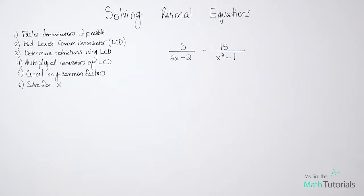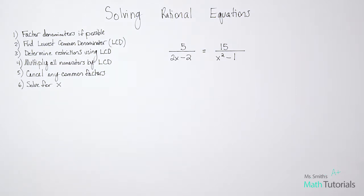Our first step is going to be to factor the denominators if possible. Step two is to find the lowest common denominator, or least common denominator — the LCD. Step three is to determine any restrictions using that LCD. Step four is to multiply all numerators by the LCD. Step five, cancel any common factors that we can. And step six is to solve for x.